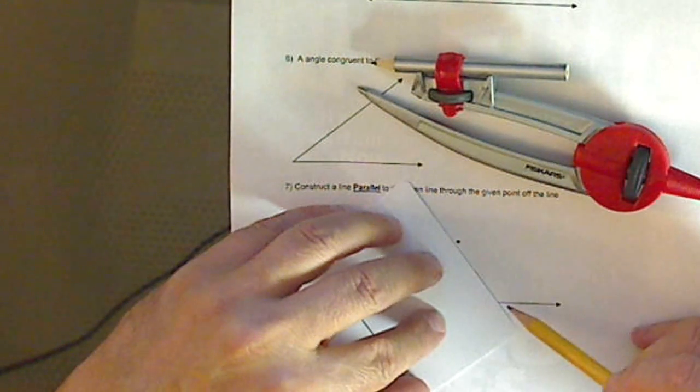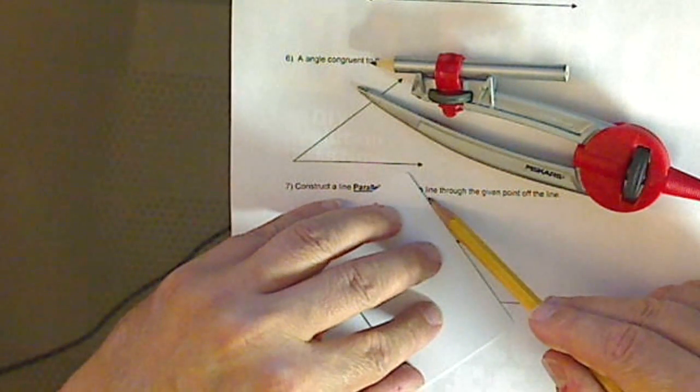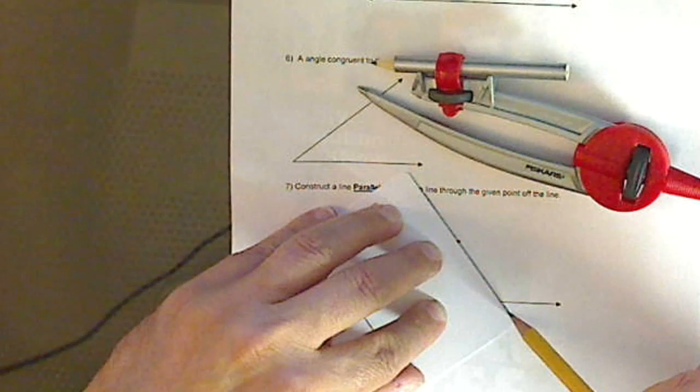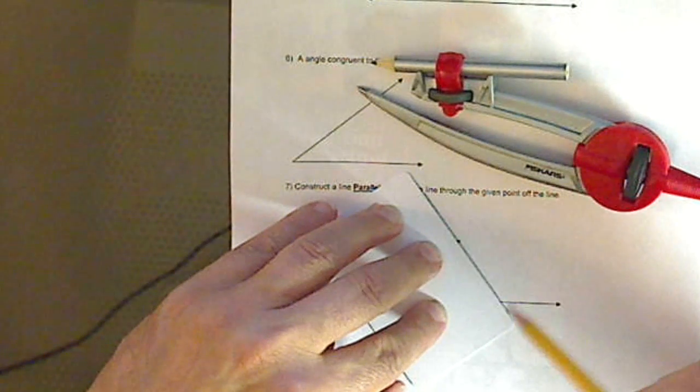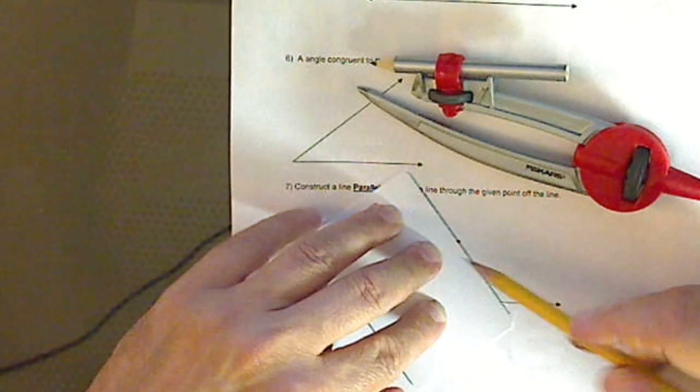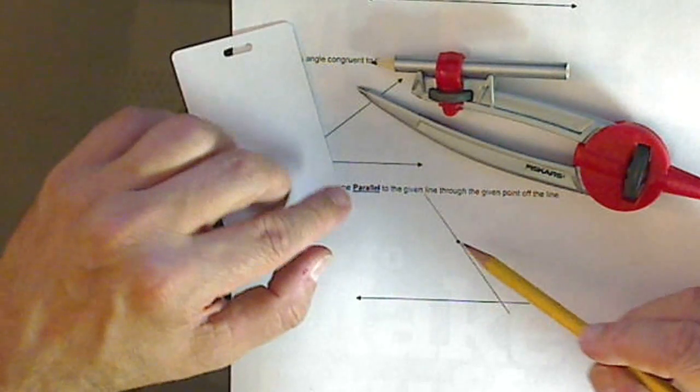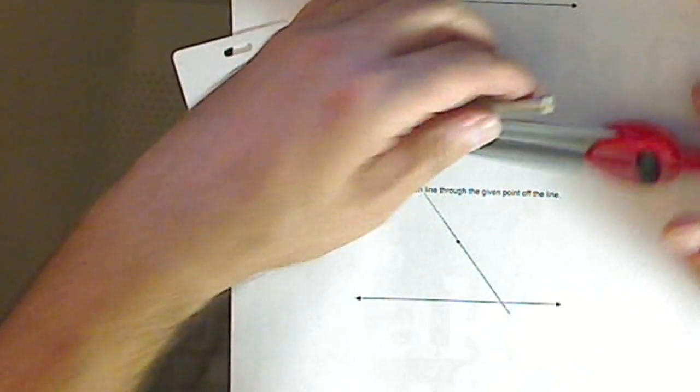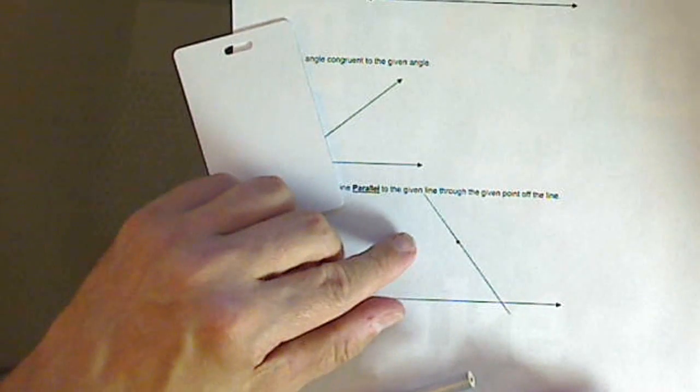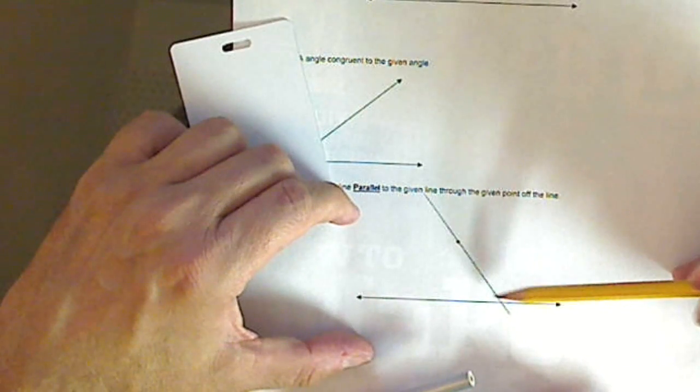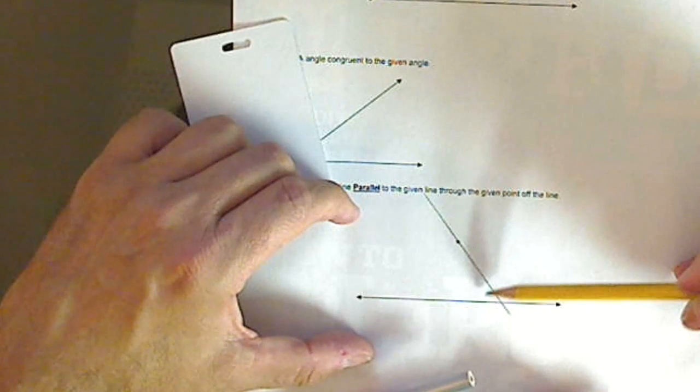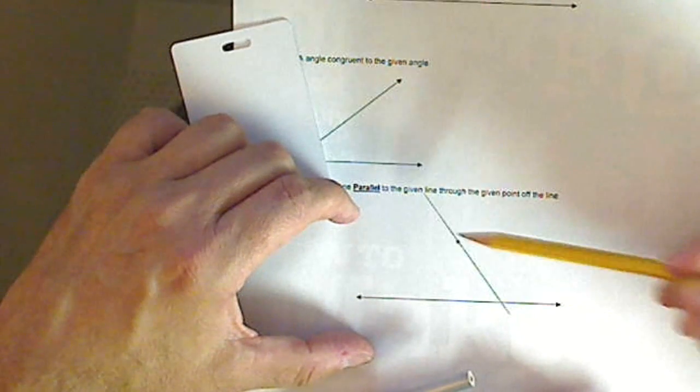First thing we have to do is make a transversal. Now, you really want to make sure that your transversal intersects this line, but I really need a lot more room up here. I'll show you why in a second because when I create my corresponding angles, I get to choose this, this, this, or this. And I'm going to choose this little one right here to put up here.